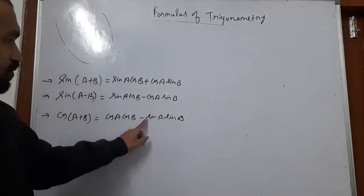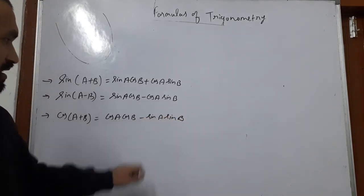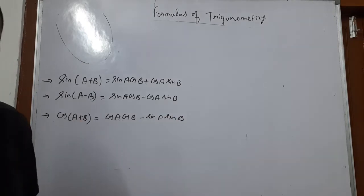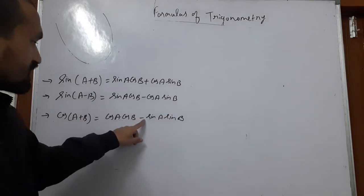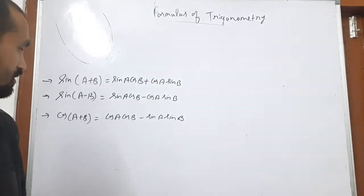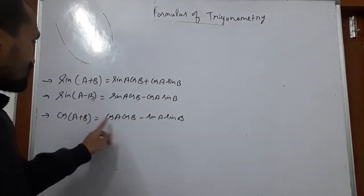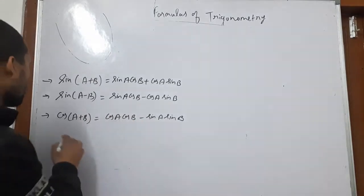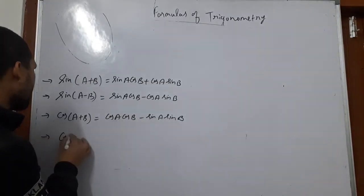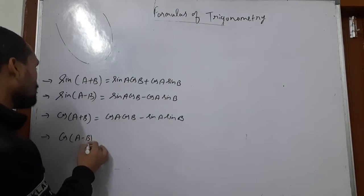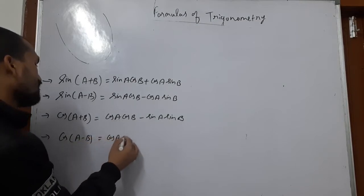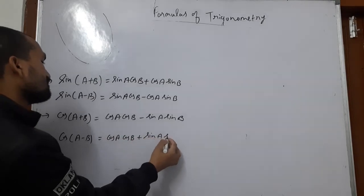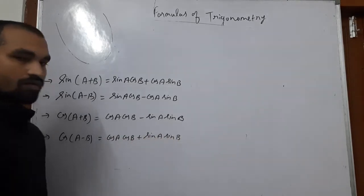It is very important to observe carefully that if cos is A plus B, then the sin terms are negative. Opposite: if it is plus then minus. If here minus then here plus. So if we have cos A minus B, then it will be cos A cos B plus sin A sin B.